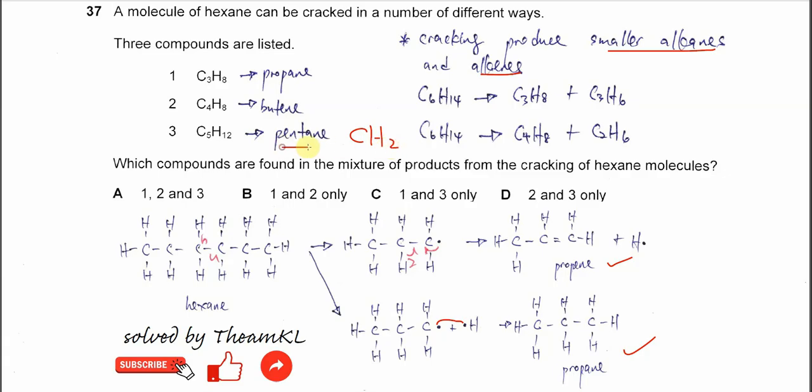So this is alkene, but this is not alkene. So the cracking of hexane rarely forms this pentane. It can form propene, as I told you just now, and it can form butene.